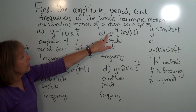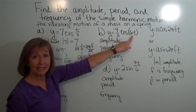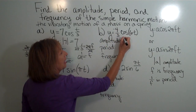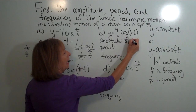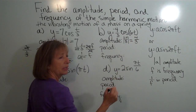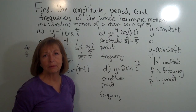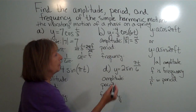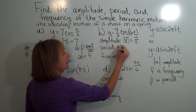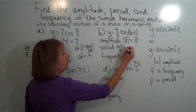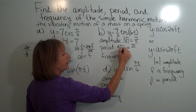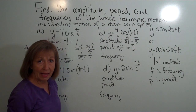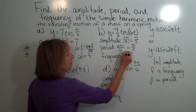The next example is y equals negative four-thirds cosine of 6t. The amplitude is the absolute value of negative four-thirds, which gives us four-thirds — that's your maximum displacement in simple harmonic motion. For the period, it's 2 pi divided by the coefficient in front of the angle, so divided by 6. Removing the common factor of 2 gives pi over 3. The frequency is the reciprocal of the period, so that's 3 over pi.